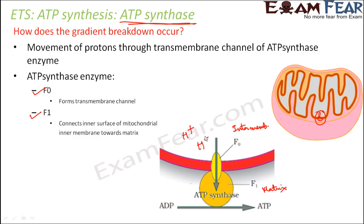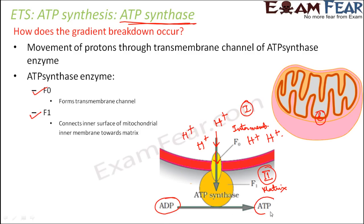The concentration of ions is more on the inter-membrane space side. When the proton gradient develops, the ATP synthase enzyme gets activated, and it allows the H+ ions to flow through it. As soon as these H+ ions start to flow from region 1 to region 2, the gradient breakdown will occur. A lot of energy will be released, and that energy will be utilized for the phosphorylation of ADP to form ATP. It has been observed that 2 H+ ions are required to pass through the membrane to produce one molecule of ATP.